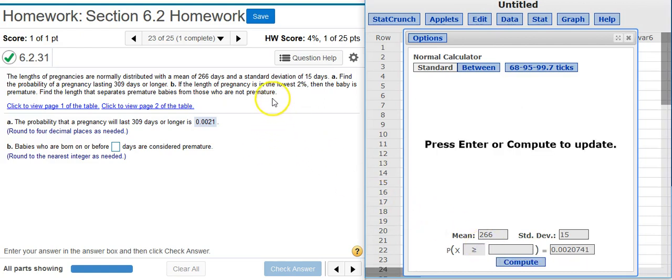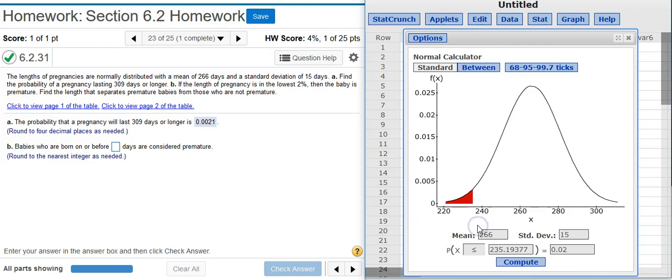Premature birth from the problem statement, we're looking for the lowest 2% of the distribution. That's the left tail of the distribution. So I need to change this to 2%. And now I can switch this around so I can get the left side and not the right side of my distribution.